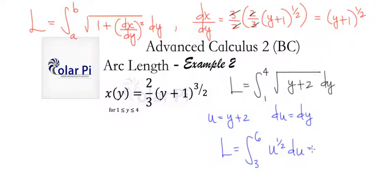So this means that we have u to the 3 halves divided by 3 halves, so multiplied by 2 thirds, evaluated at 3 and 6. So what that means is we'll have 2 thirds, and then it's going to be the square root of 6 cubed, and then minus the square root of 3 cubed.